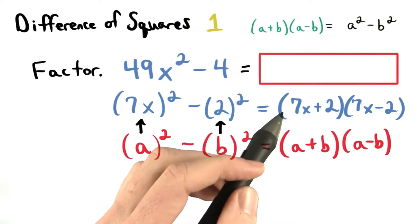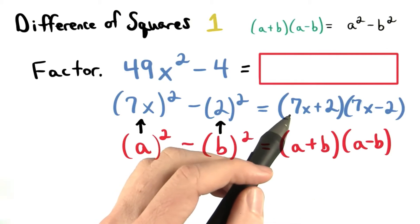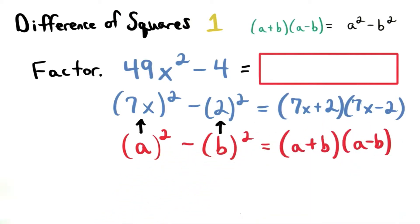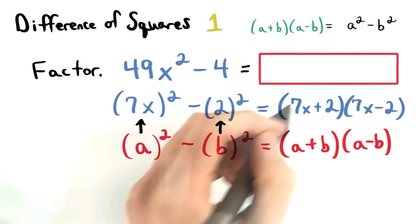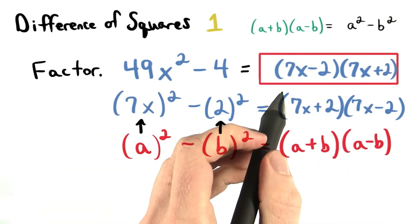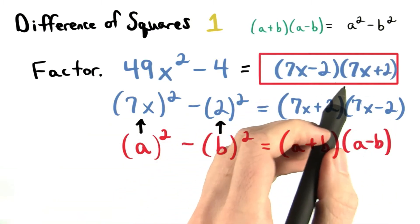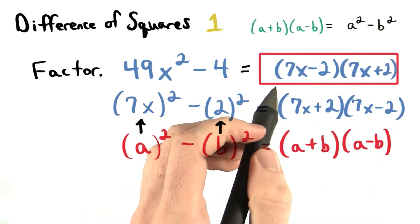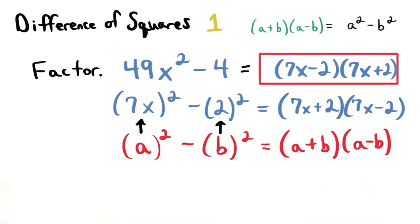So the two factors are 7x plus 2 and 7x minus 2. This is our answer. You could have also switched the order of the factors and you would still have gotten it right.